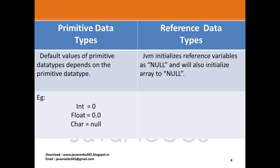Whereas JVM initializes reference variables as null and will also initialize array to null. So every reference variable by default will be initialized to null. Also notice that all the arrays will be initialized to null as well.